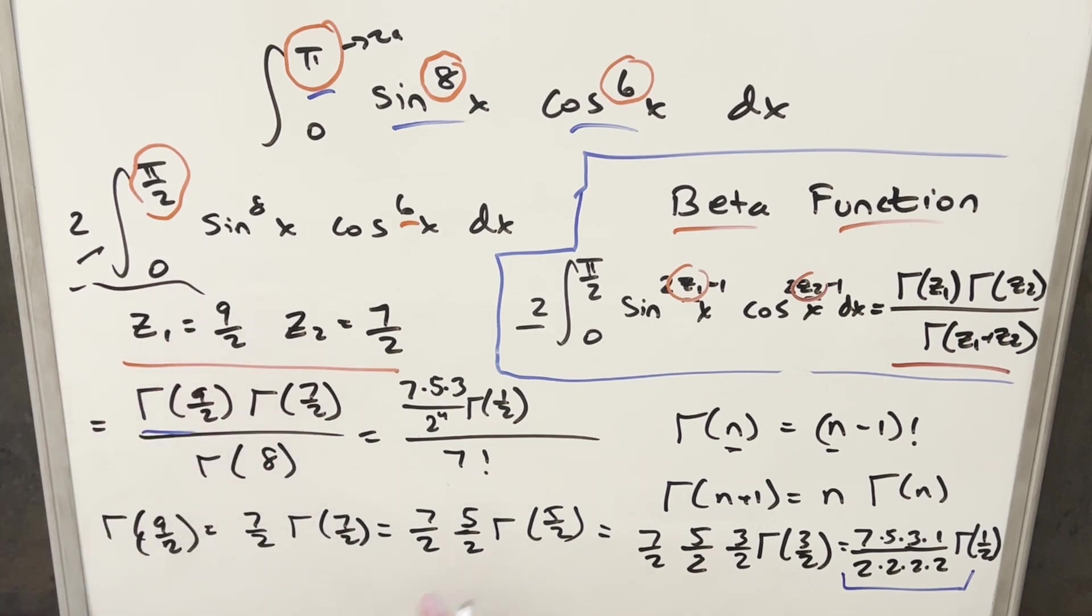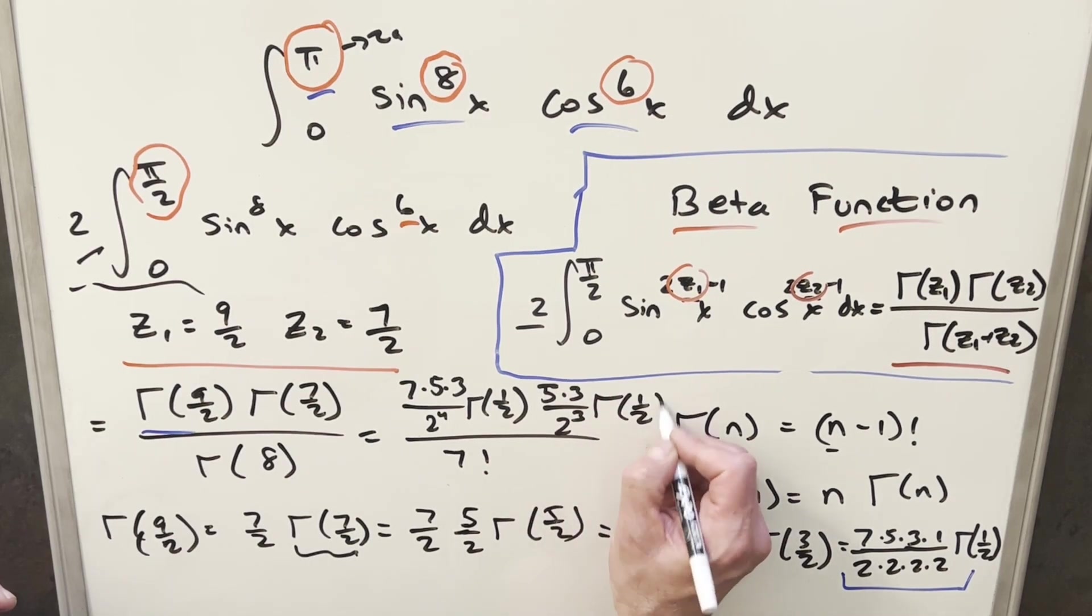And so for gamma of 7 halves, we calculated exactly the same way. We have it right here. For our value of gamma of 7 halves, we're going to have just 5 times 3 over 2 cubed, and we're going to have gamma of 1 half at the end.